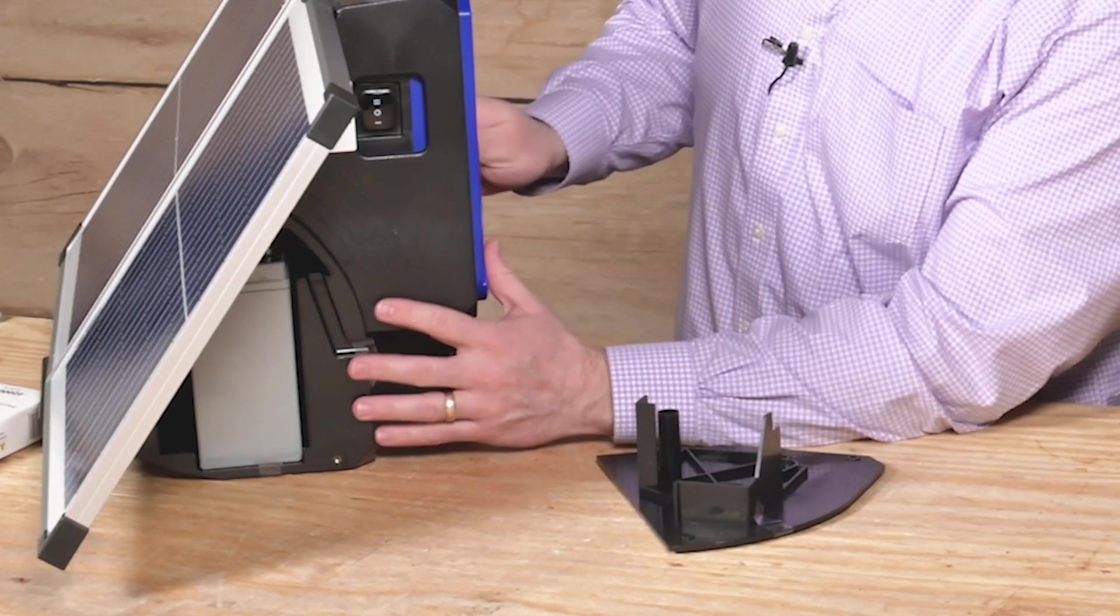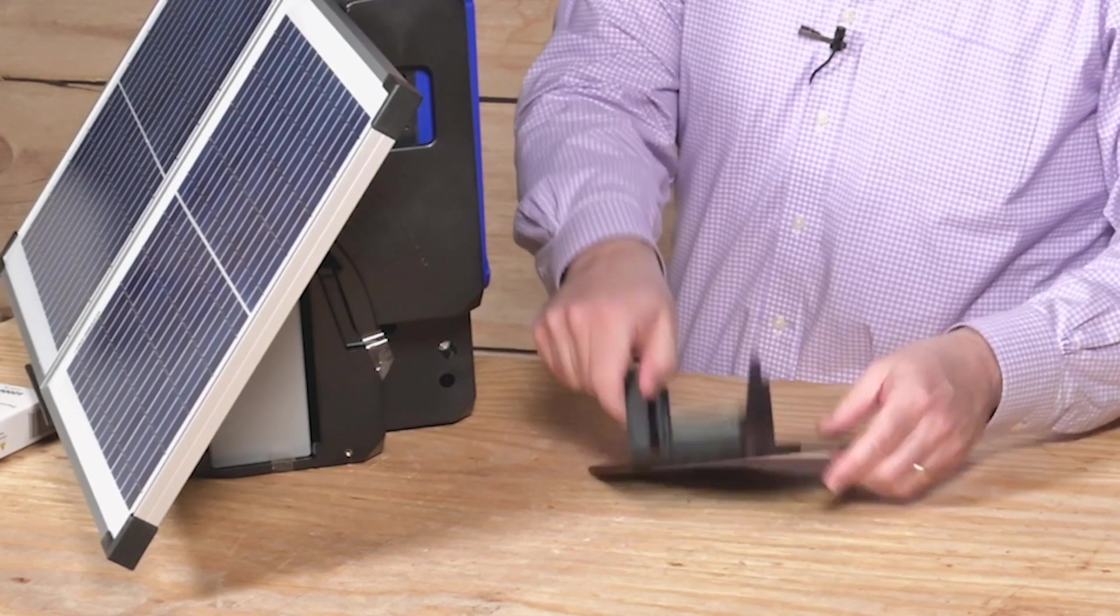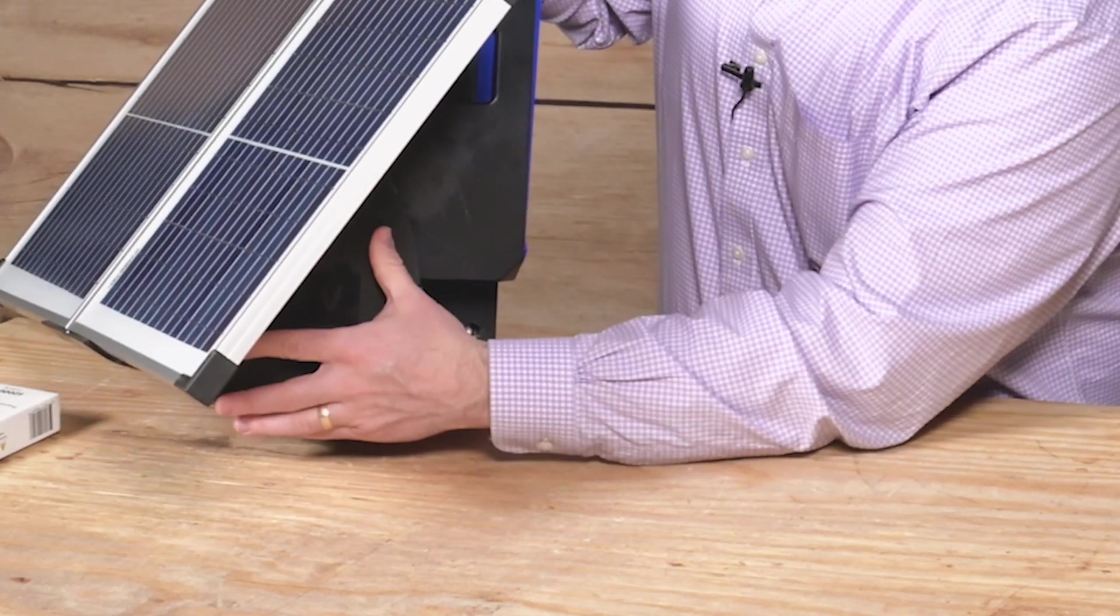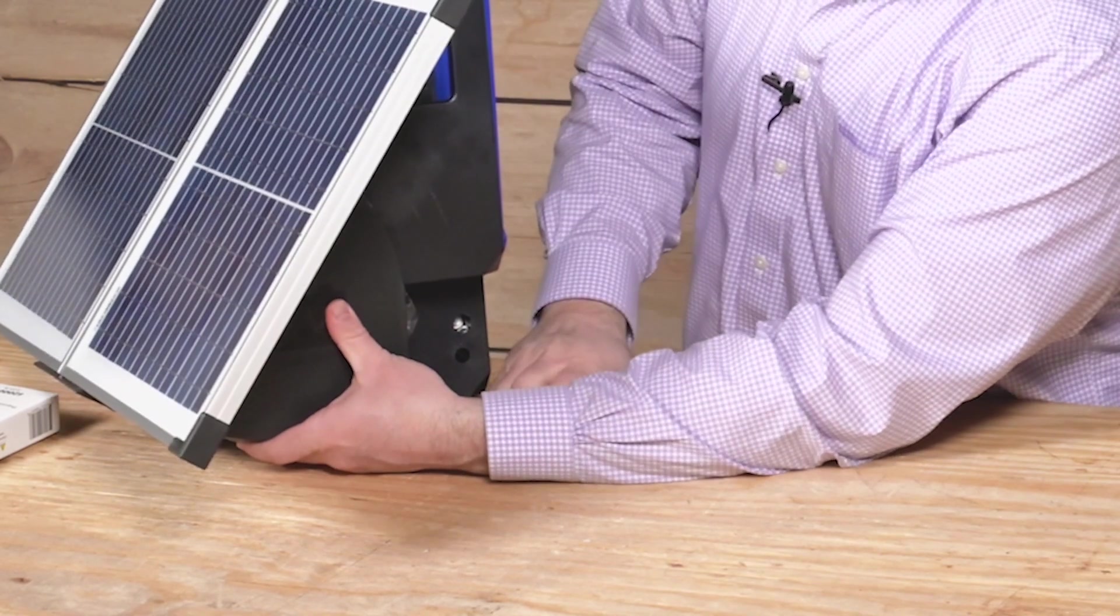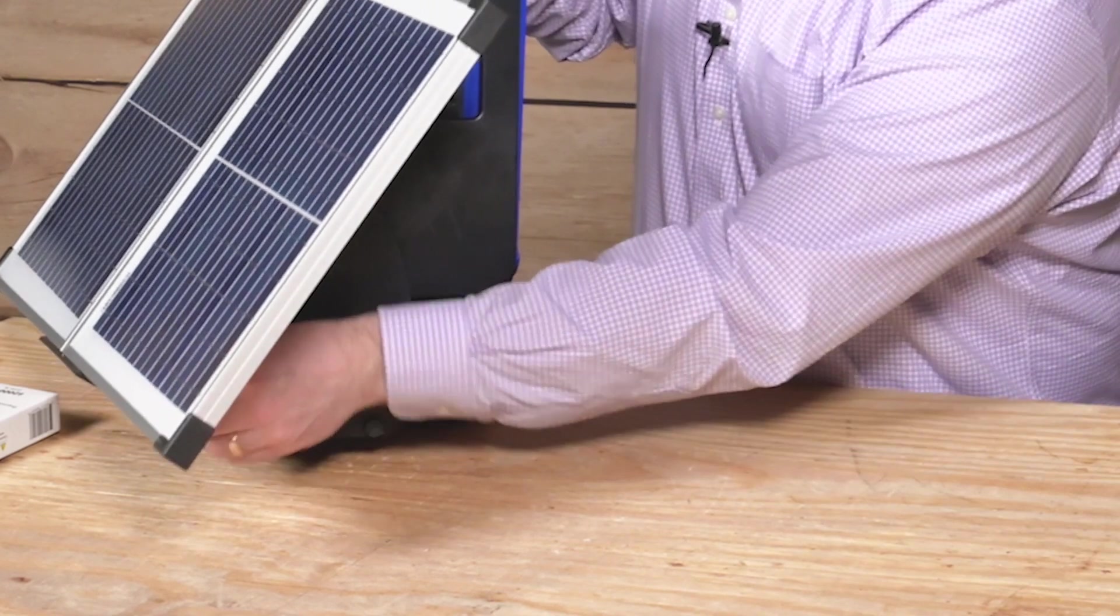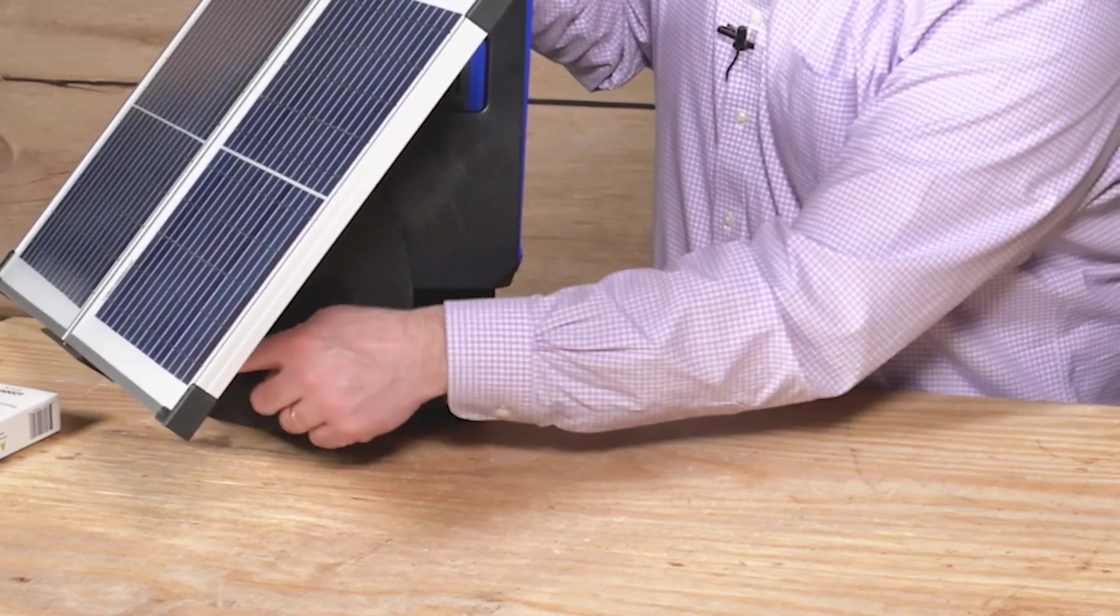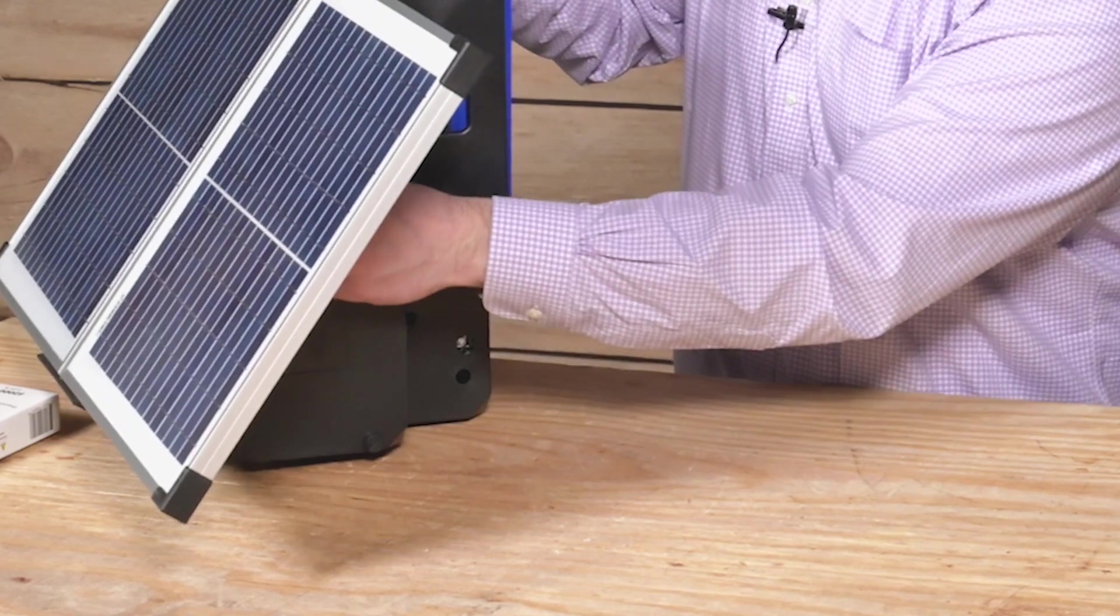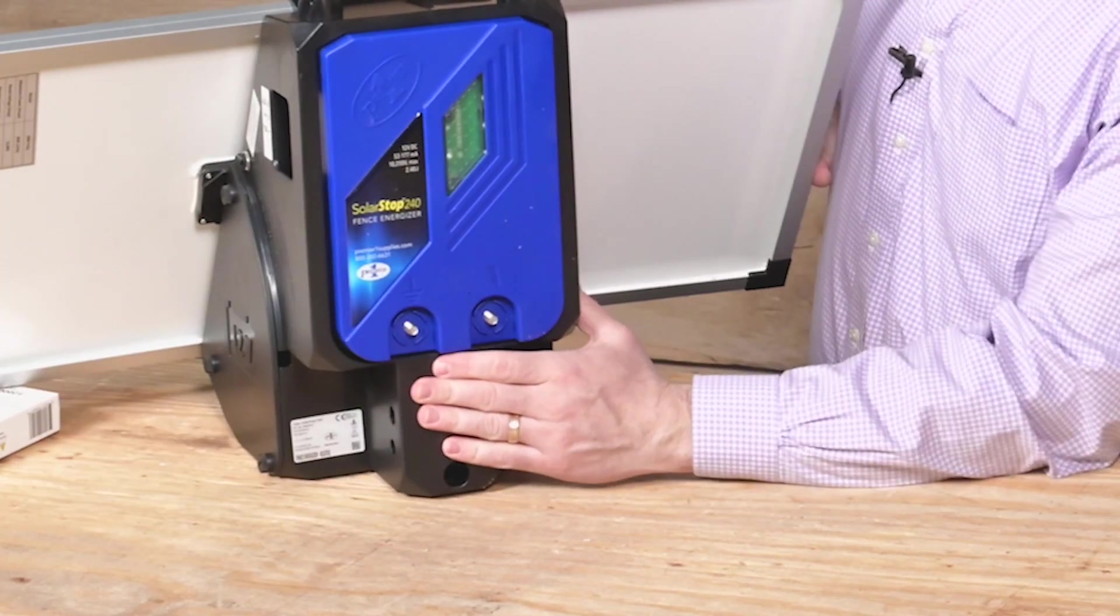We are now ready to button up the Energizer. Take your side plate. Place it like so. There are three thumb screws. The thumb screws only need to be finger tight. Though there is a slot for a standard screwdriver if your hands need a little help.